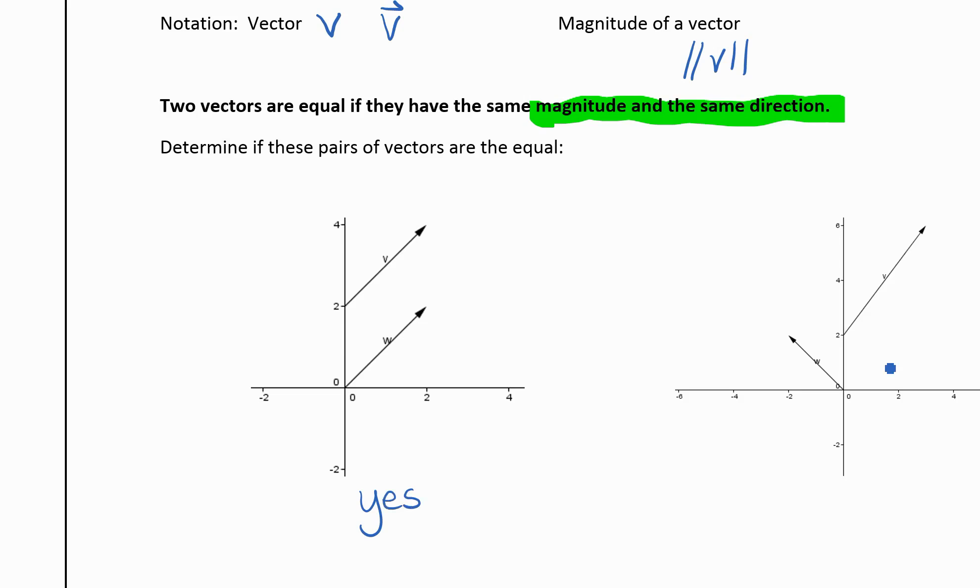Now these two obviously aren't in the same direction and aren't even the same length. So these two are not equal. So that's just a very quick introduction to vectors, and we'll learn more about them next.